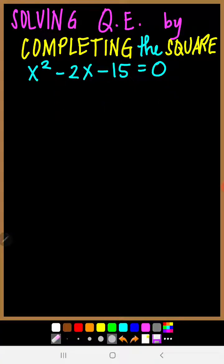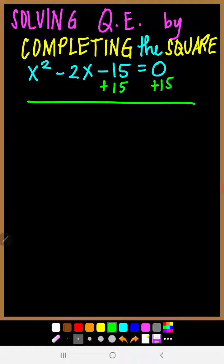For this given, we have to make sure that negative 15 is on the right side. Since it is negative 15, we just add 15 to both sides. So this will become 0, and what's left is x squared minus 2x equals 15.